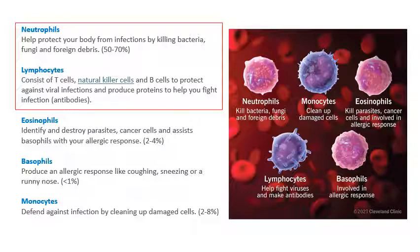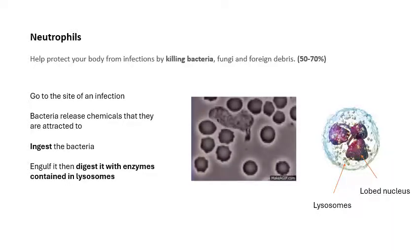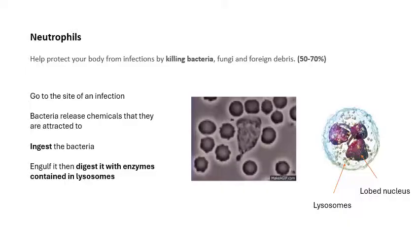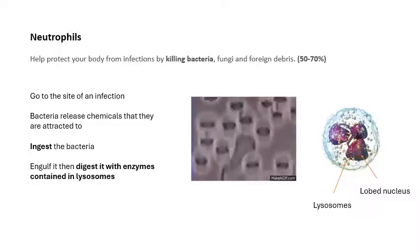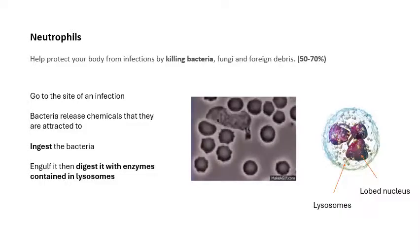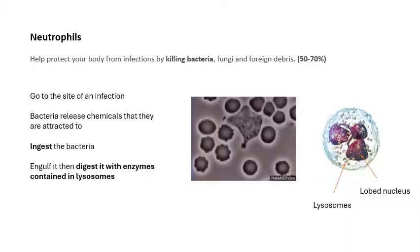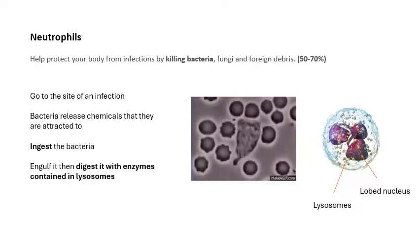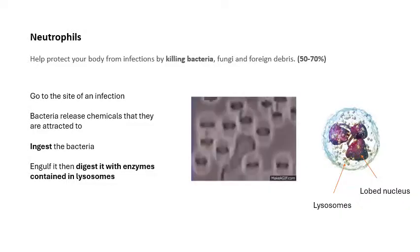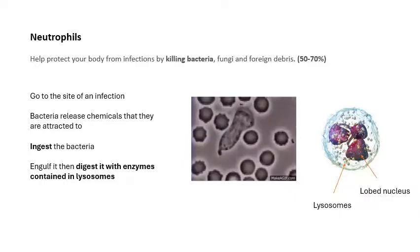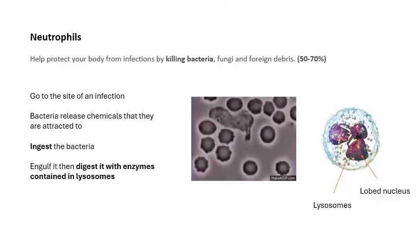Neutrophils are the most common type of white blood cell. They attack bacteria, fungi, and other foreign debris that gets inside your body. These bacteria will release chemicals that attract the neutrophils, so the neutrophils go to where the bacteria are and engulf them — taking the bacteria inside the neutrophil. They then ingest and digest the bacteria with enzymes stored in lysosomes, which break down the bacteria.